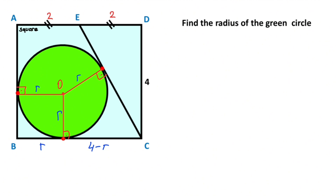Notice that these two line segments are tangent to the green circle. Therefore, according to the two-tangent theorem, these two line segments must be equal to each other. So this segment is also four minus r.